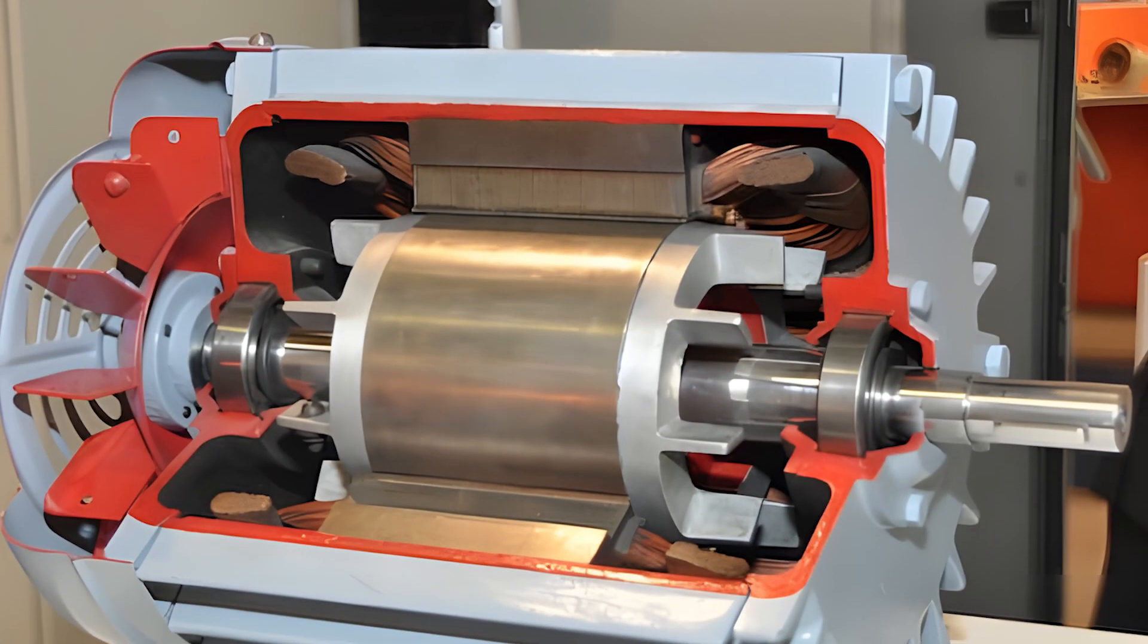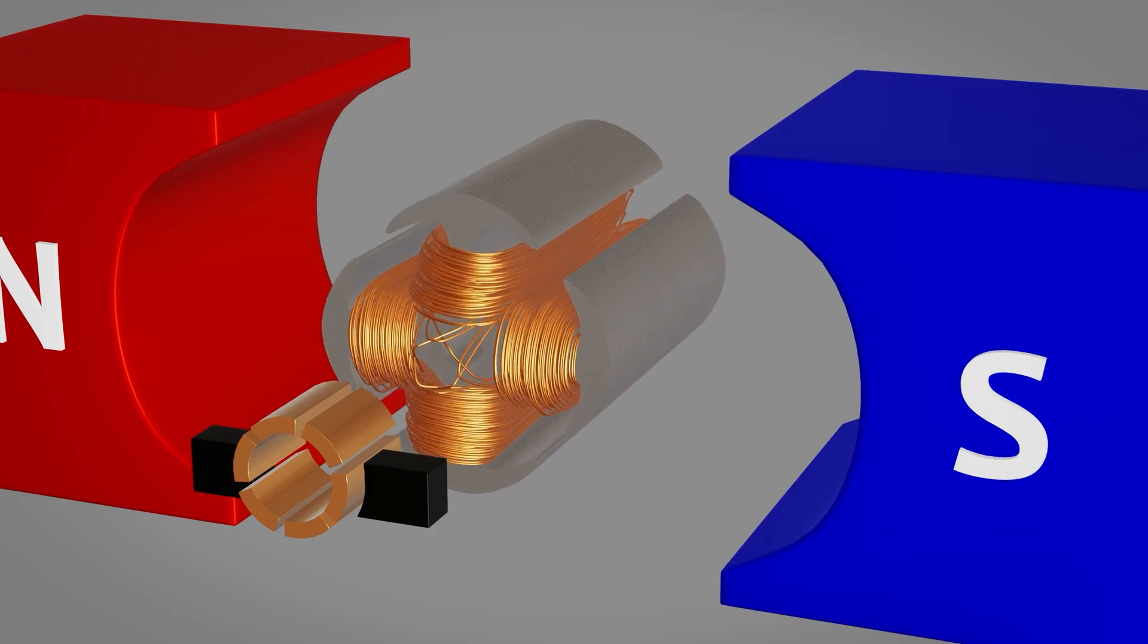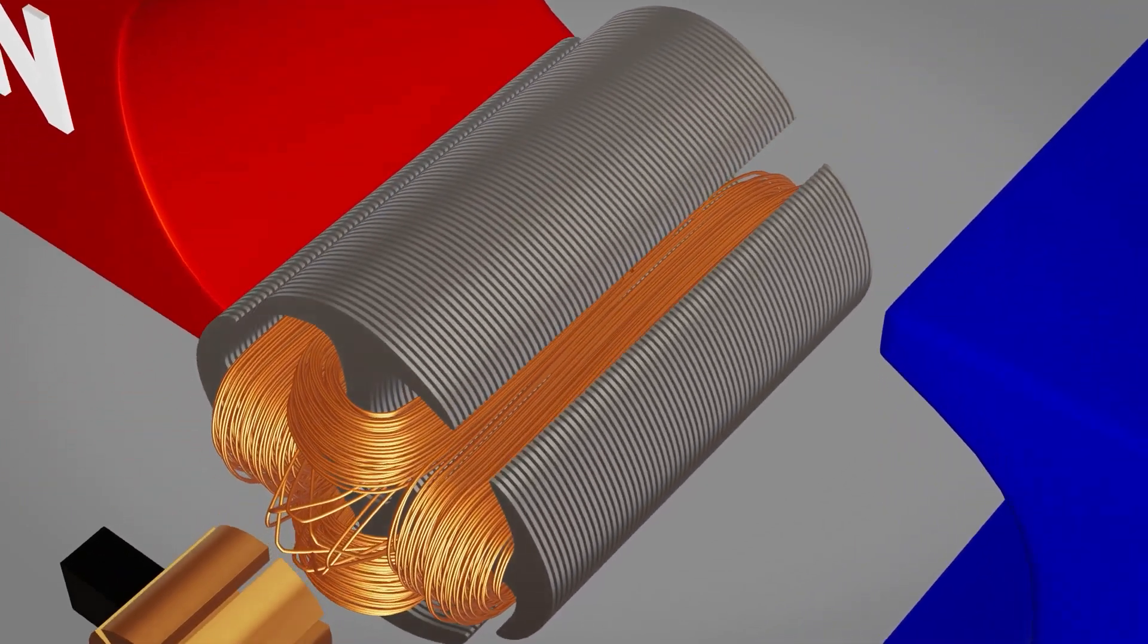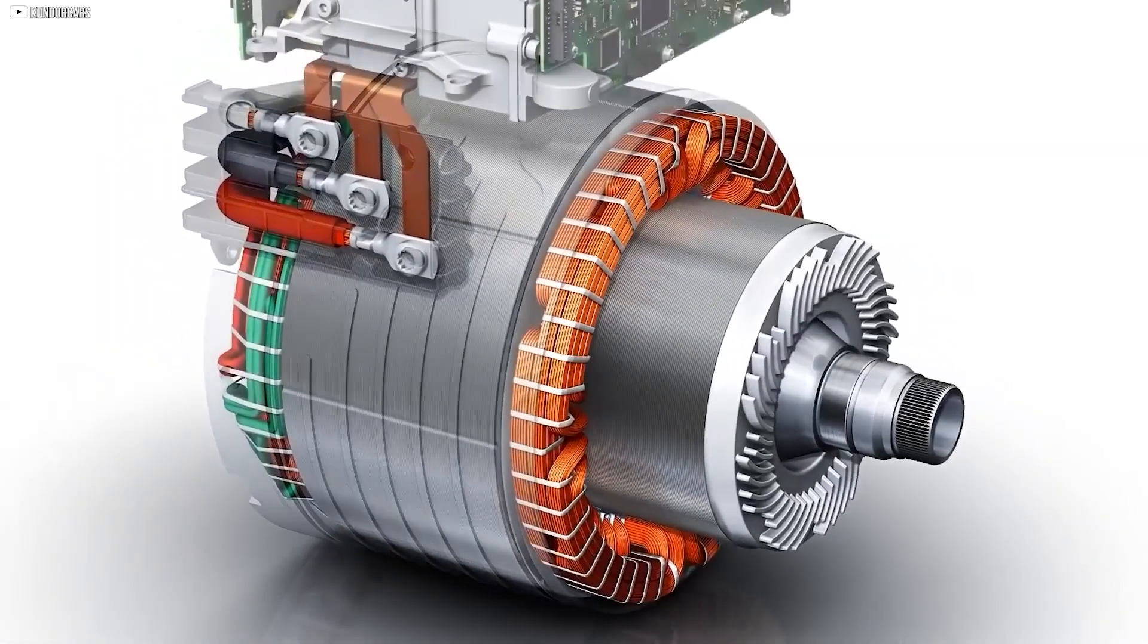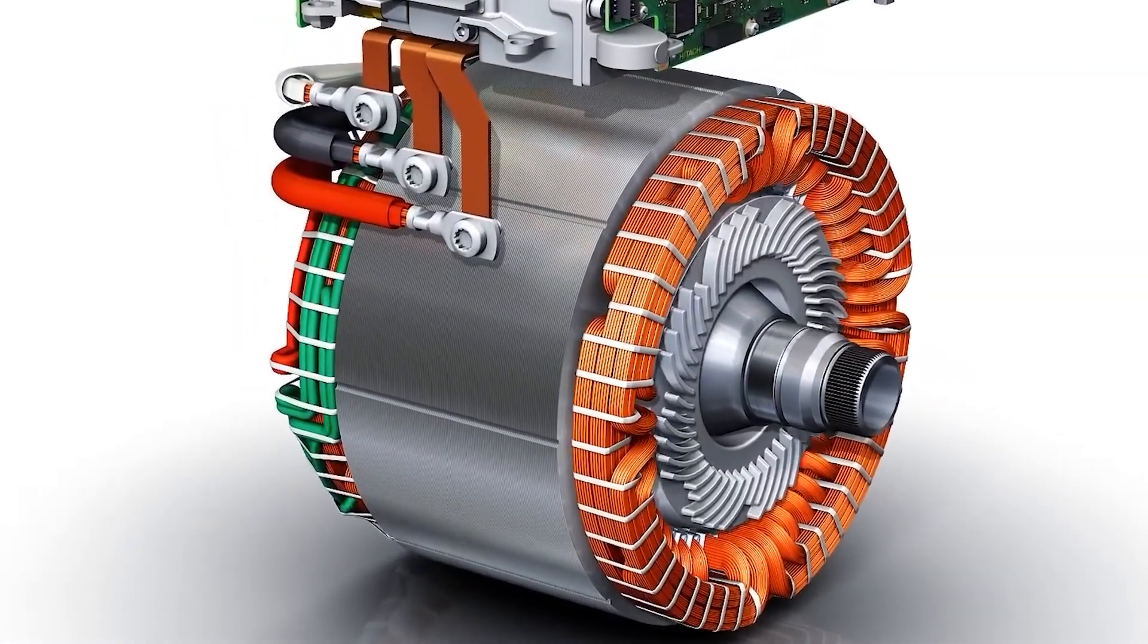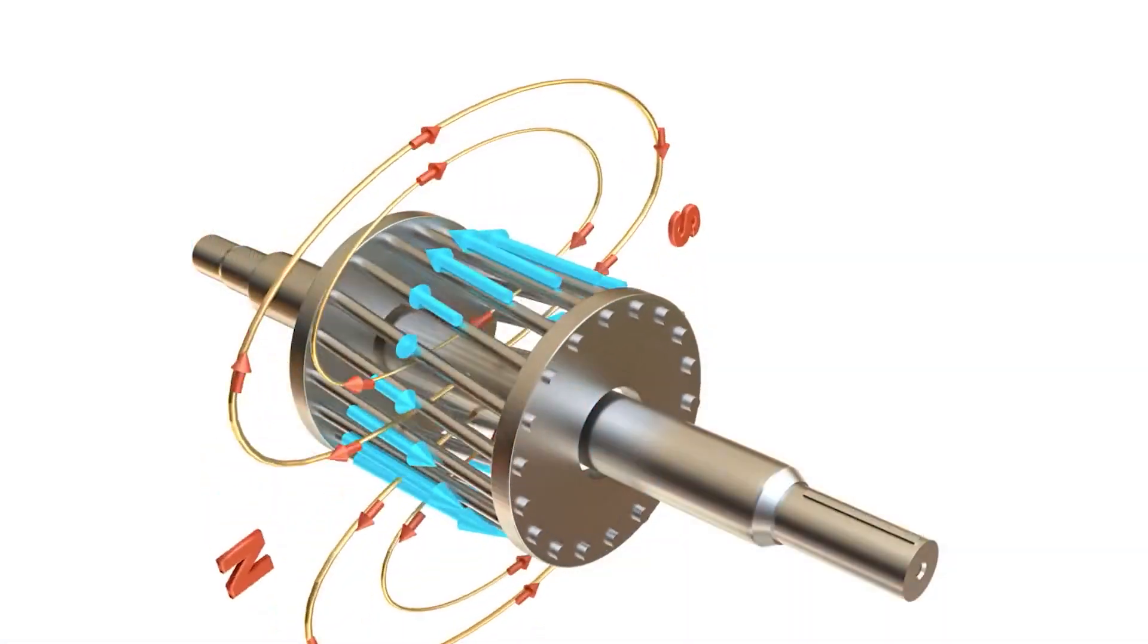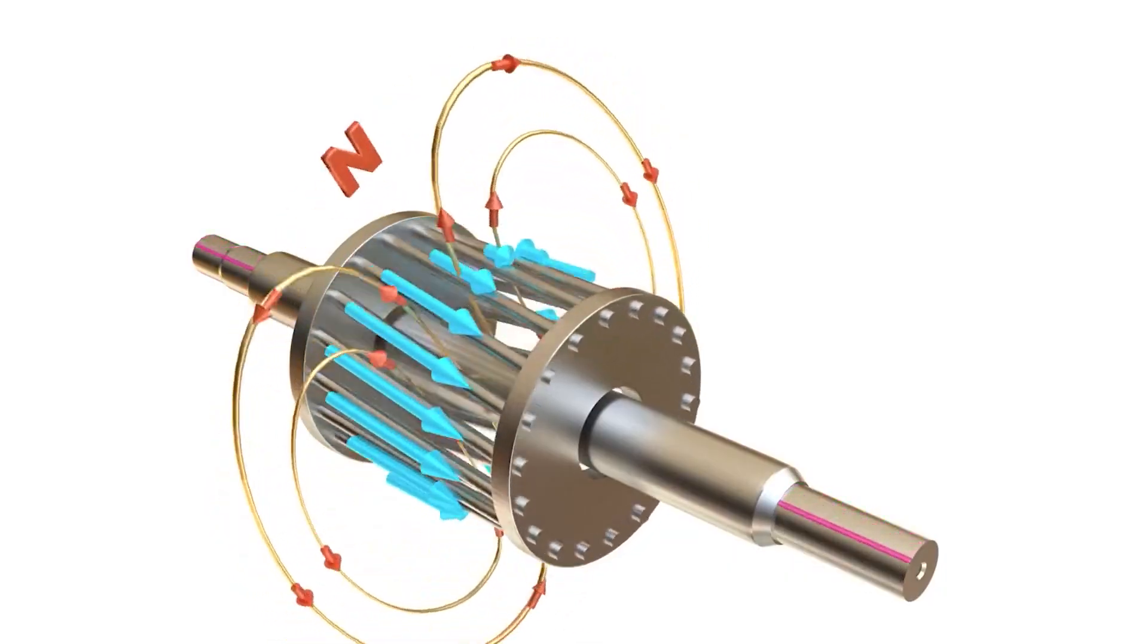Let's dive into how this process works in a real electric motor. Imagine an electromagnet sitting between two permanent magnets. The electromagnet's magnetic field is constantly trying to align with the permanent magnet's field. However, to keep it spinning, we need to reverse the current through the electromagnet every half turn.